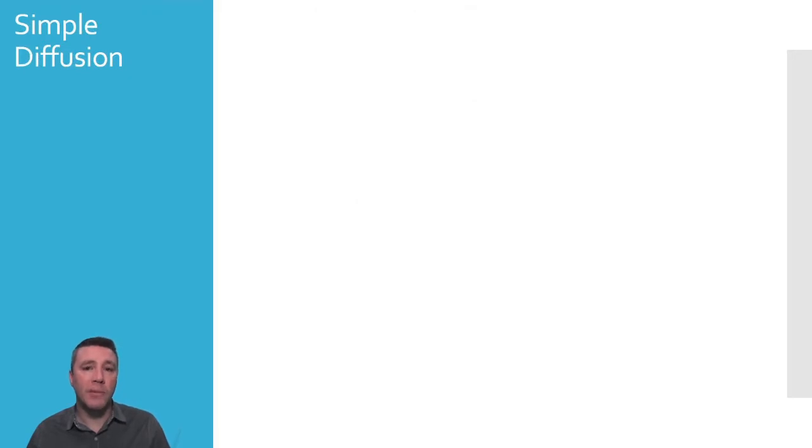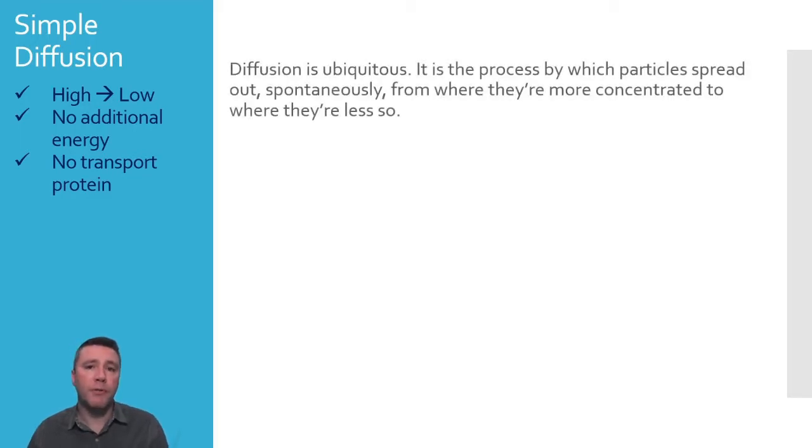We will begin with simple diffusion. Underneath the name of each type of transport, you'll notice a reference to a set of key features about that form of transport. Simple diffusion, or just diffusion, is one of the most common and important processes in nature. It is the process by which like particles spread out and occupy larger volumes as they collide with one another, moving farther away. As they do so, they travel from areas where they are more densely concentrated to areas where they are less so.